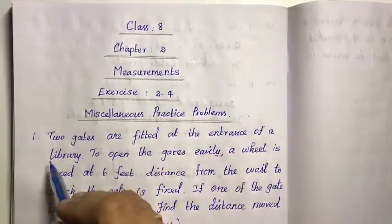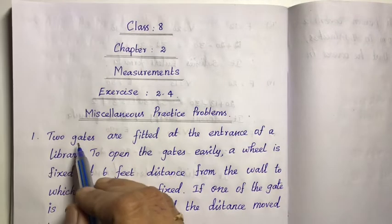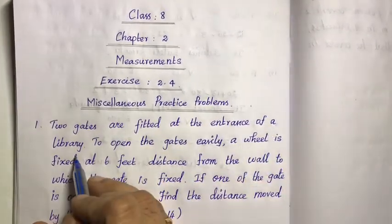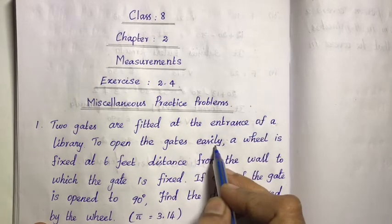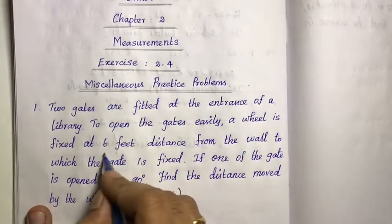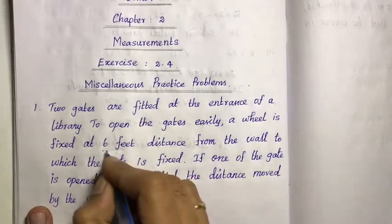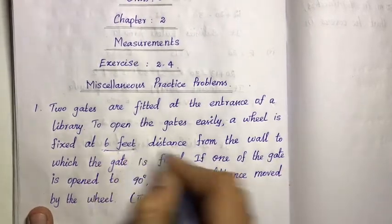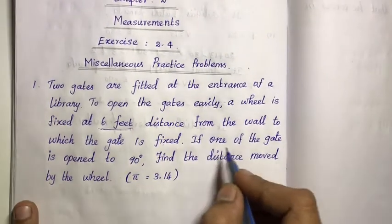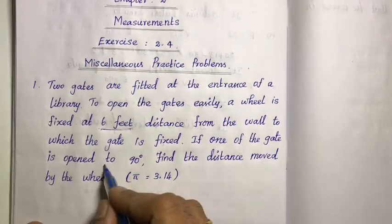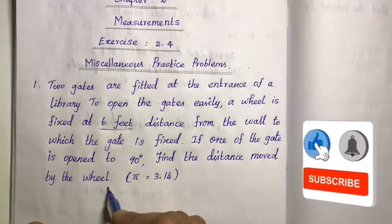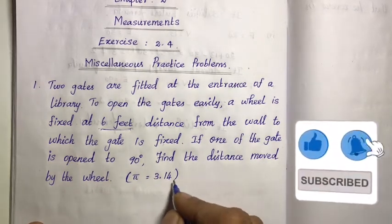Miscellaneous Practice Problems. Two gates are fitted at the entrance of a library. To open the gates easily, a wheel is fixed at 6 feet distance from the wall which the gate is fixed. If one of the gates is opened to 90 degrees, find the distance moved by the wheel. Use the value of pi as 3.14.